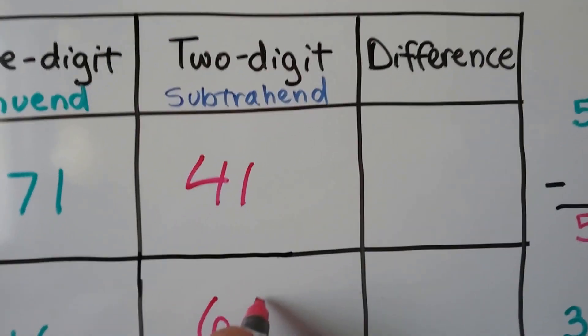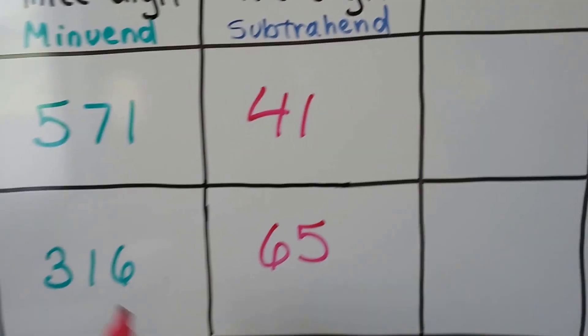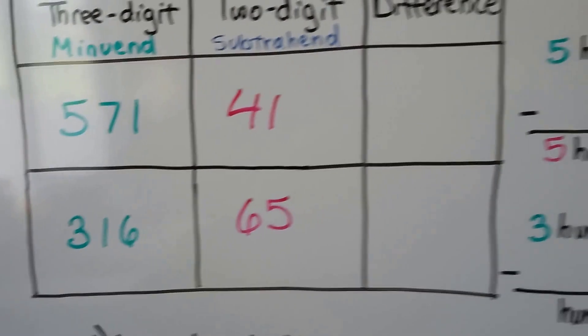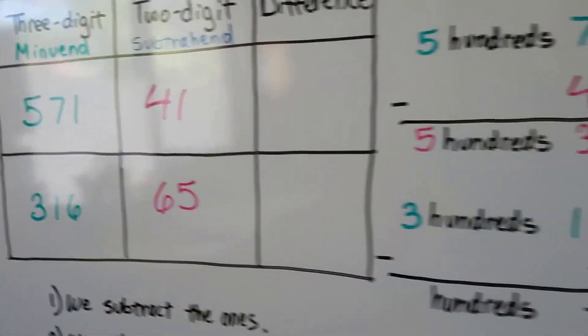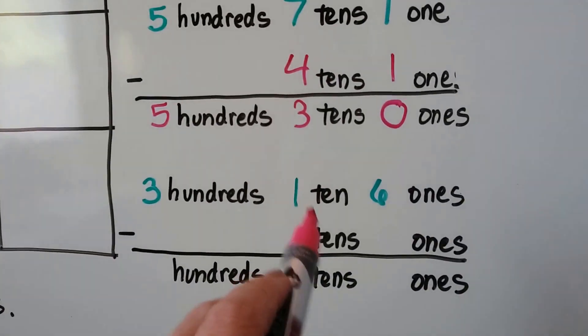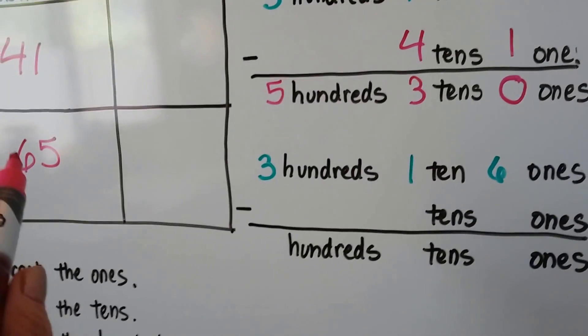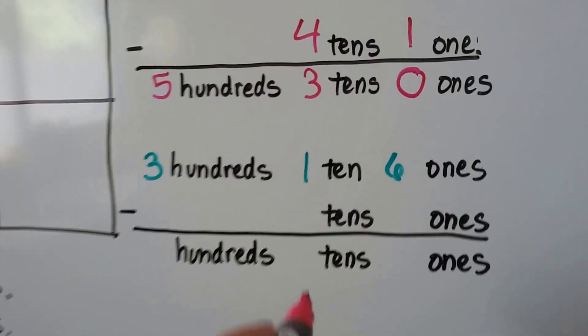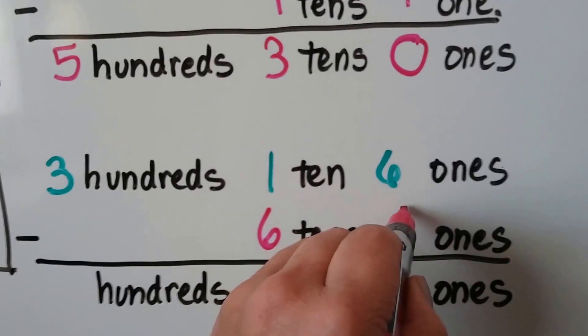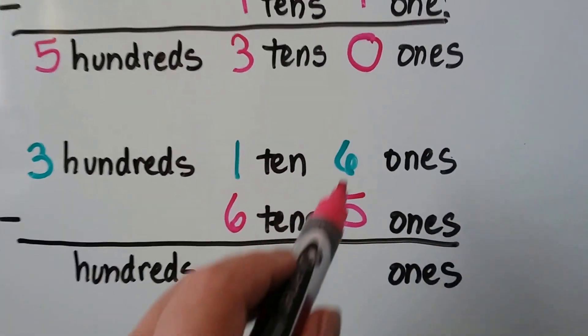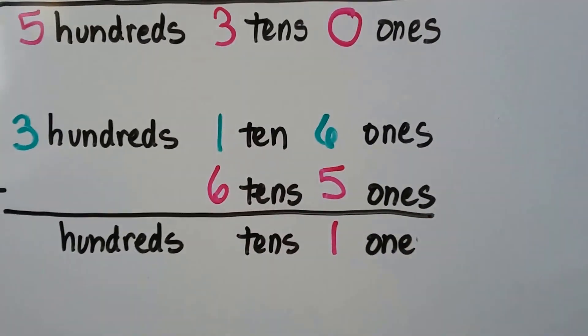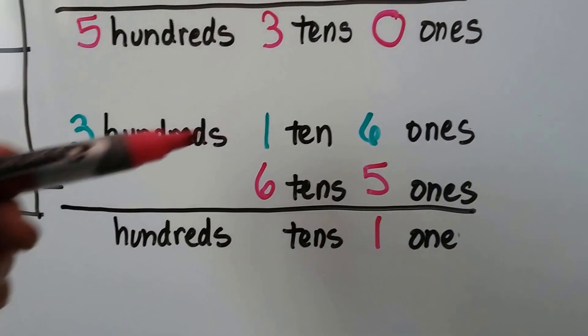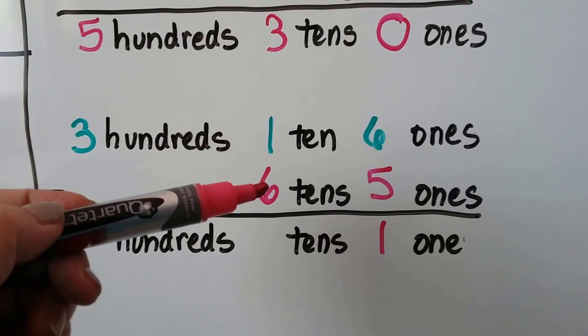So we're going to subtract 65 from 316. That's 3 hundreds, 1 tens, and 6 ones, isn't it? 3 hundreds, 1 tens, and 6 ones. And we're going to subtract 6 tens and 5 ones. 6 ones take away 5 ones is just 1 one, isn't it? We don't need that S now. 1 ten, take away 6 tens. Uh-oh.